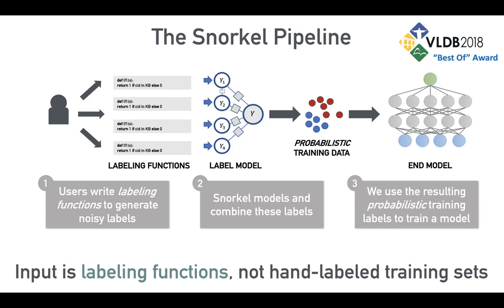Whether you have 100,000 emails, a million emails, or 10 million emails — it doesn't affect the amount of work we have to do. We just have to write our rules. The denoising process is automatic and doesn't use any ground truth labels.